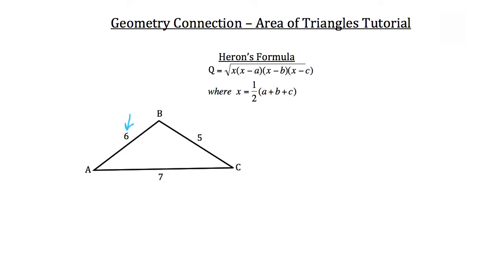And side length C has a value of six units, and I'd like you to calculate the area of triangle ABC. You want to begin using Heron's formula by solving for X. In this case, X is equal to one-half of five plus seven...